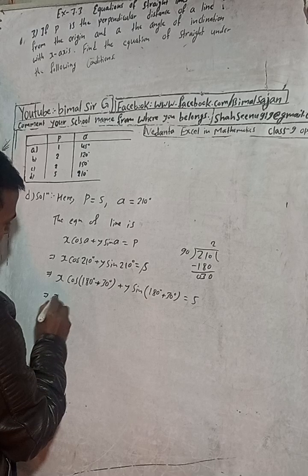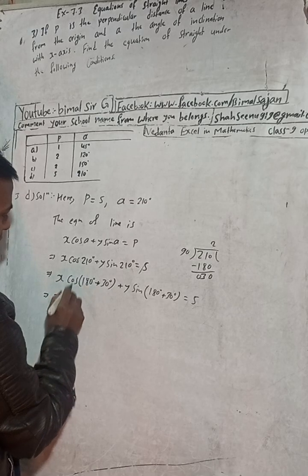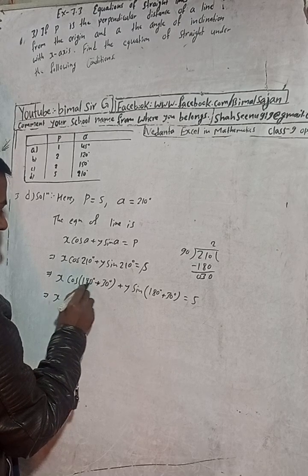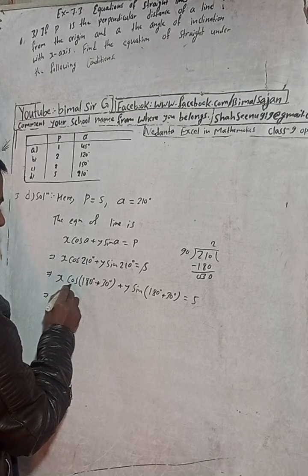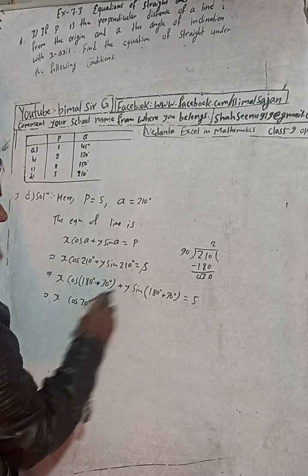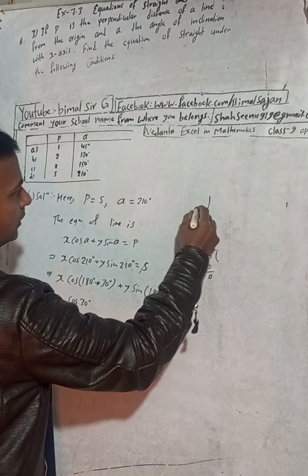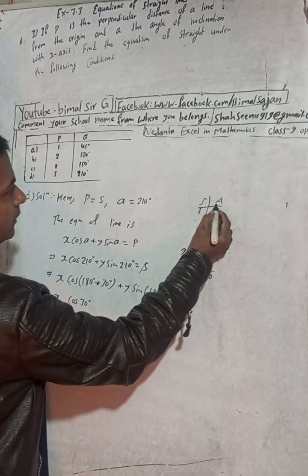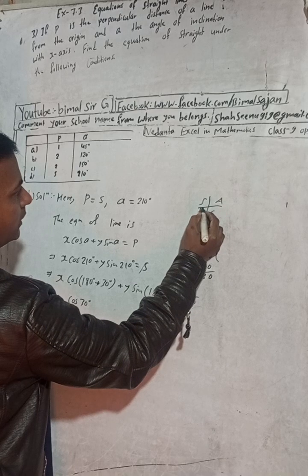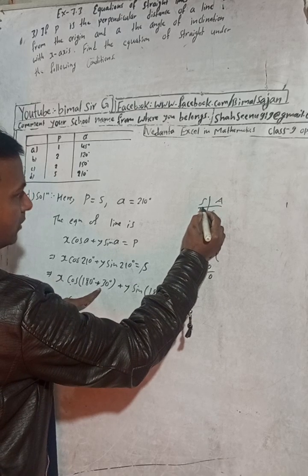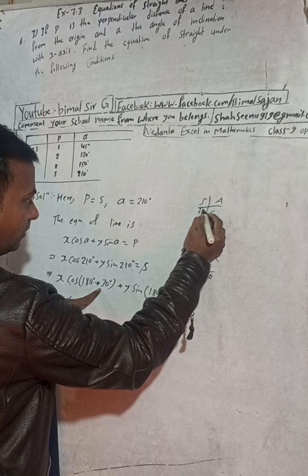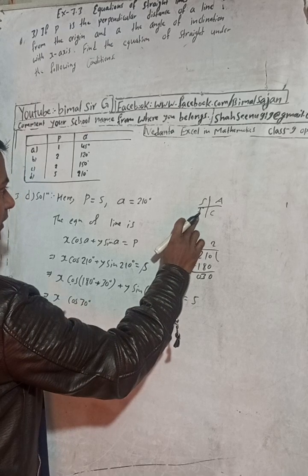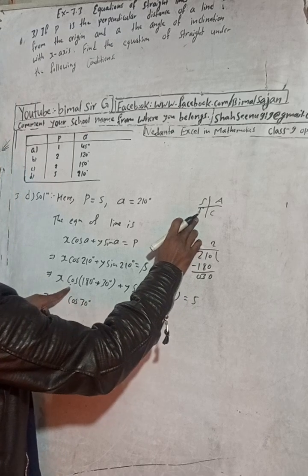For 180, cos will be cos only. If this was 90 then cos would be sin, but this is 180 so cos will be cos 30 degrees. Now see the CAST rule. 180 plus 30 means this is 0, this is 90 degrees, this is 180 degrees. Plus 30 means it comes in third quadrant.